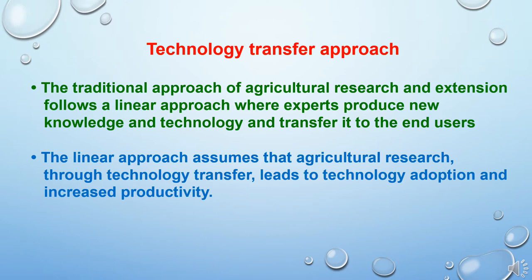The traditional approach of agriculture research and extension follows a linear approach, where experts produce new knowledge and technology and transfer it to the end users. The linear approach assumes that agriculture research through technology transfer leads to technology adoption, increased production, and increased productivity.